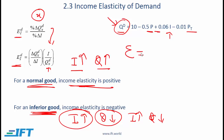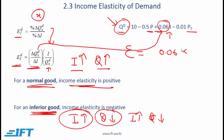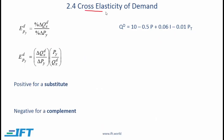You might be asked to calculate the elasticity number. You take the coefficient — that is Delta Q over Delta I — which is this coefficient. So the elasticity is 0.06 times the income level divided by quantity demanded. If given an income level of 2000 and a quantity of 75, you simply plug in the numbers and calculate the income elasticity of demand.